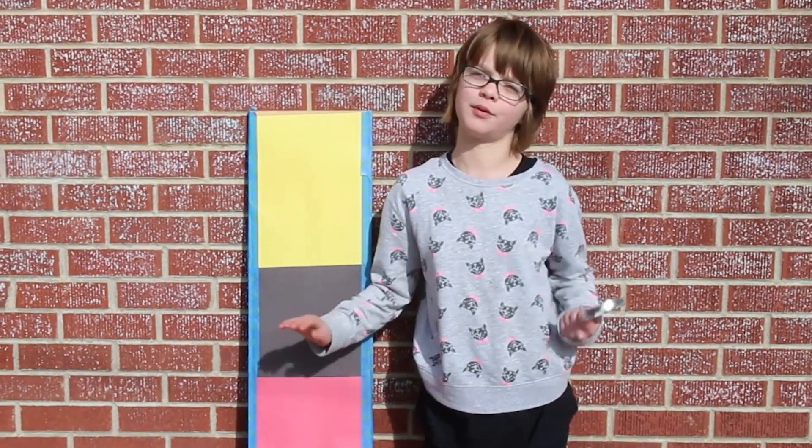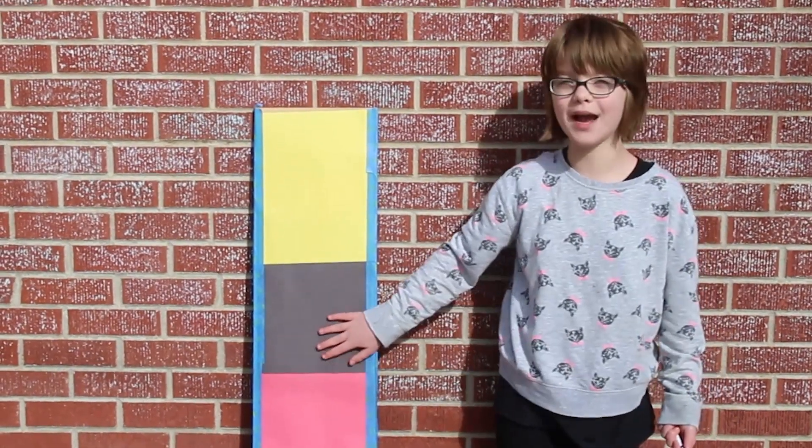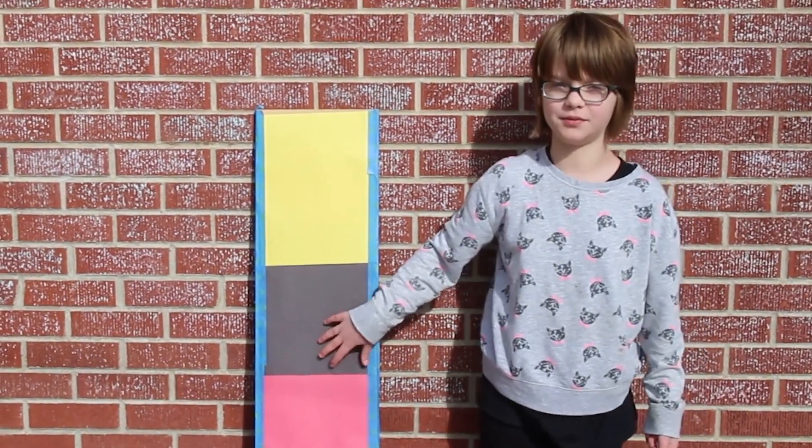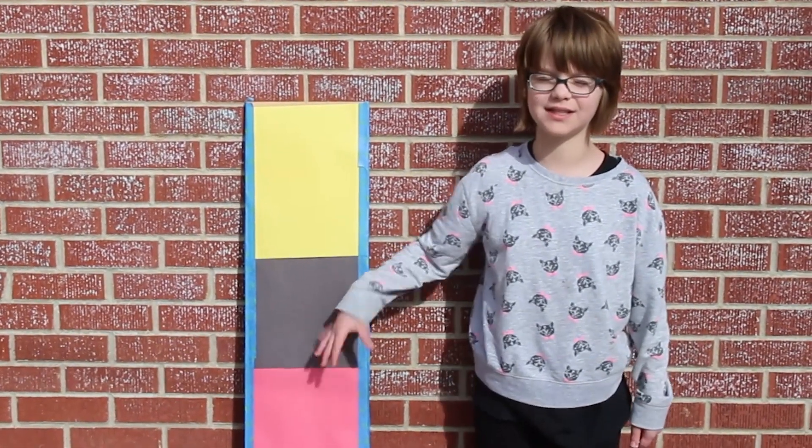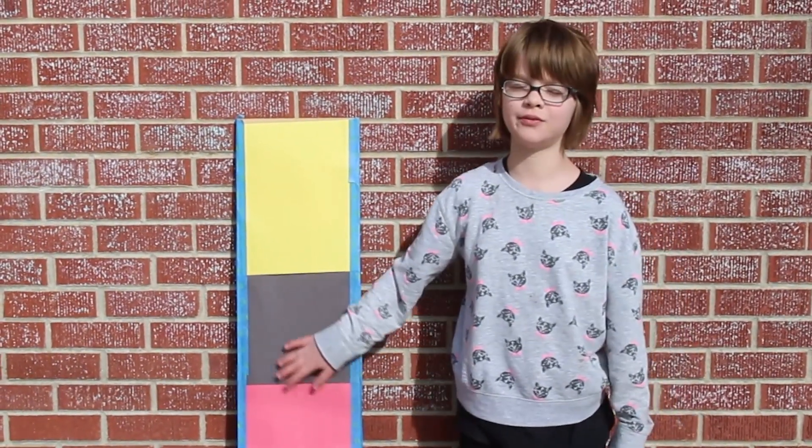But then, if the sun is coming down and hitting the black paper, the black paper has to absorb it. And when the black paper absorbs it, it's not light anymore. It has to transform into something else. And what it transforms into is heat.